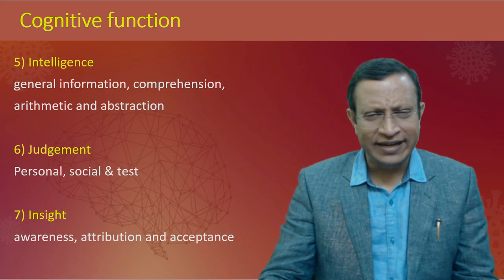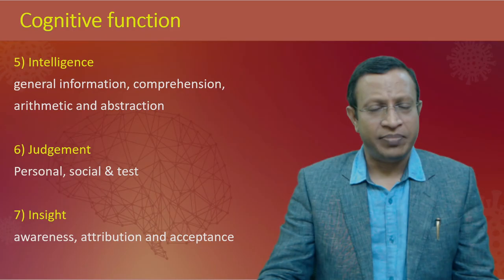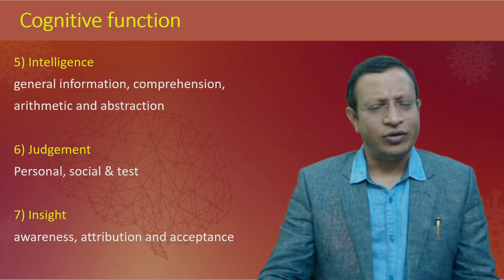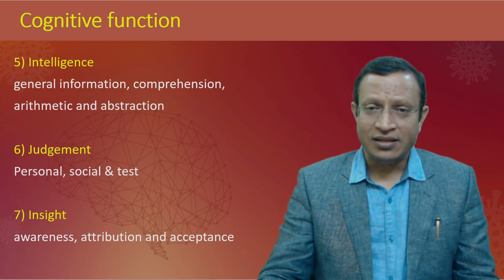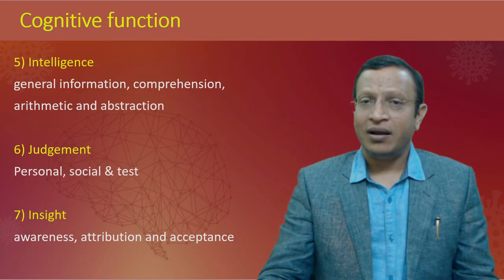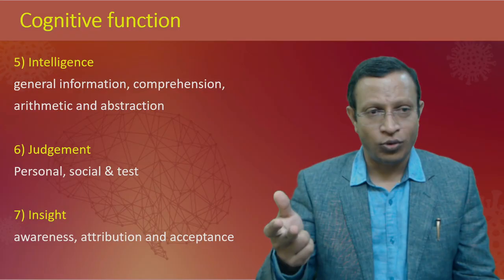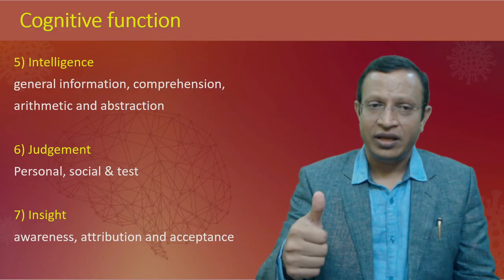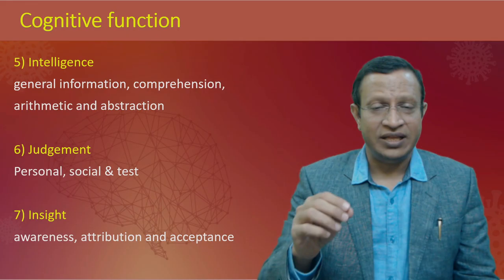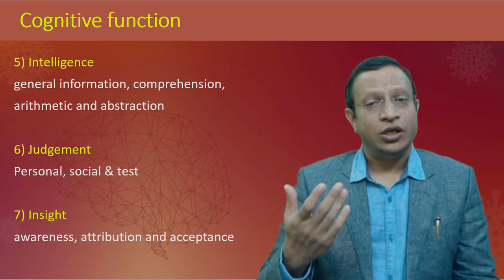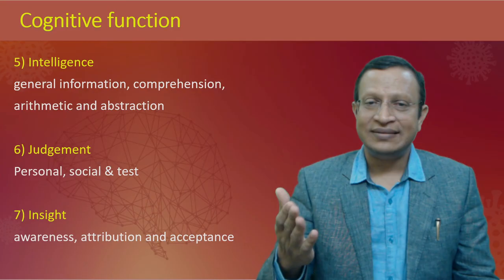Intelligence is assessed via general fund of information — ask for five personalities, five rivers, five festivals, political leaders, or for illiterate patients, practical knowledge such as agricultural yield. Also assess comprehension, arithmetic (simple calculations), and abstraction (similarities, differences, proverbs). Judgment is assessed on personal, social, and test judgment. Insight is assessed on three dimensions: awareness of illness, attribution of illness, and acceptance of treatment — insight can be present, absent, or partial.